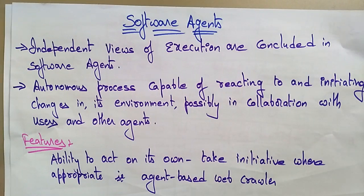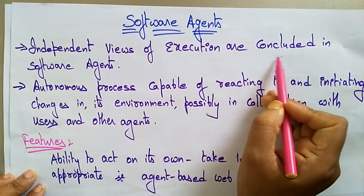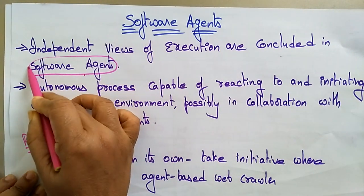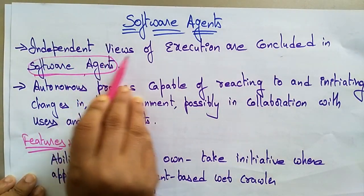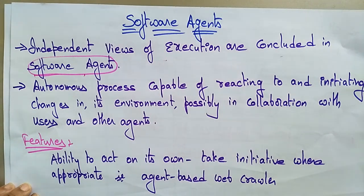Welcome back. The next topic in distributed systems is software agents. What are the different software agents and what are their features? Software agents consist of independent views of executions — each software agent has its own way of execution, and all different types of software agents are included in this concept.